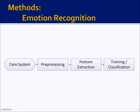Our system works by preprocessing useless silence regions out of the signal and then extracting frequency and energy levels in speech. We then determine these ranges for each emotion. Each emotion has different frequency and energy ranges, and so we can classify an audio signal based on where the audio signal's energy and frequency values fall under.